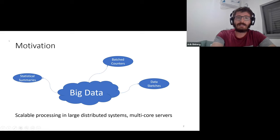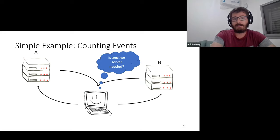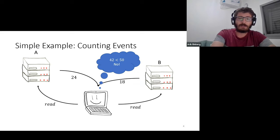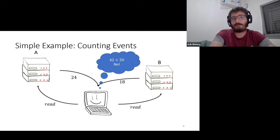Let's take a look at a motivating example: a simple batch counter. We have two servers, server A and server B, and a controller (the laptop) that needs to decide whether another server is needed. It decides that another server is needed if it sees 50 connections in total. Using a batch counter, the controller reads the counter on A, sees 24, reads the counter on B, sees 18, sees 42 connections and decides no, another server is not needed. But this is when everything is happening sequentially.